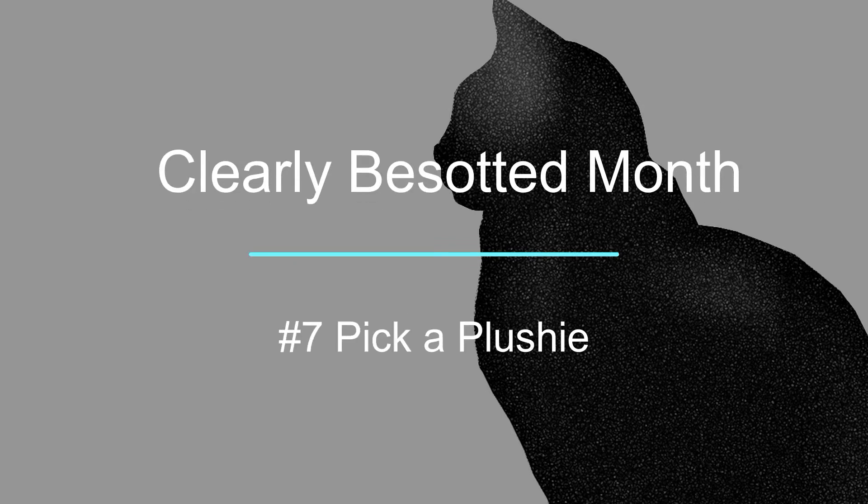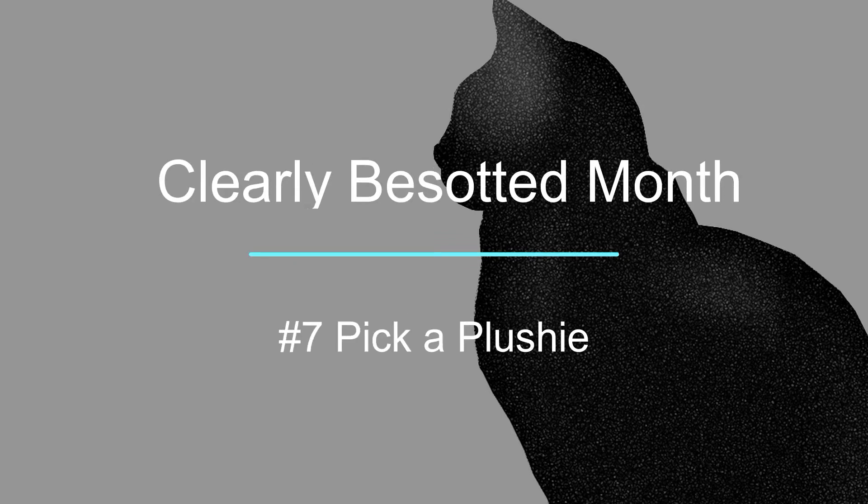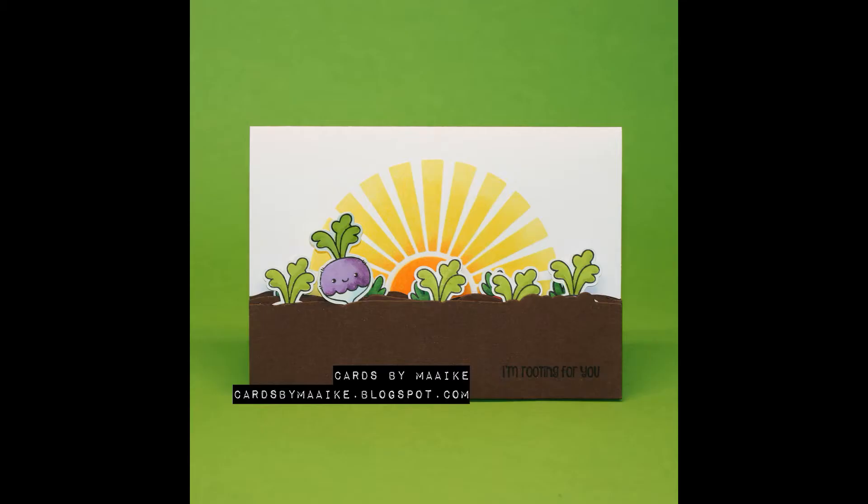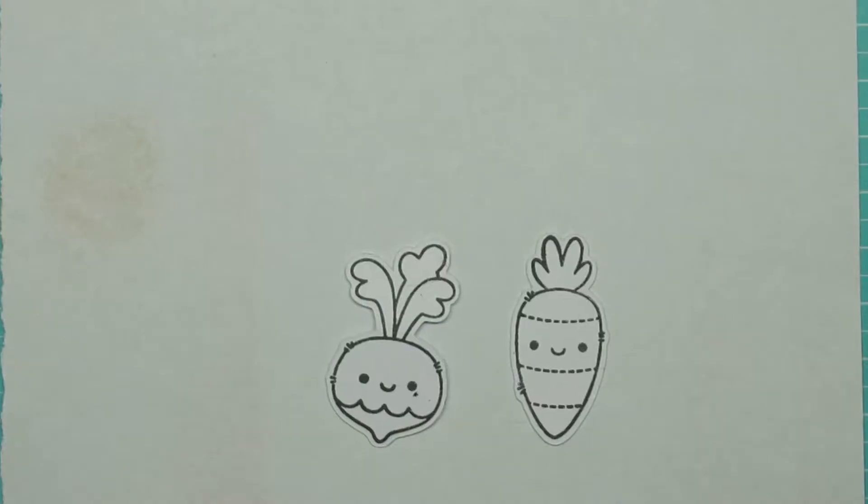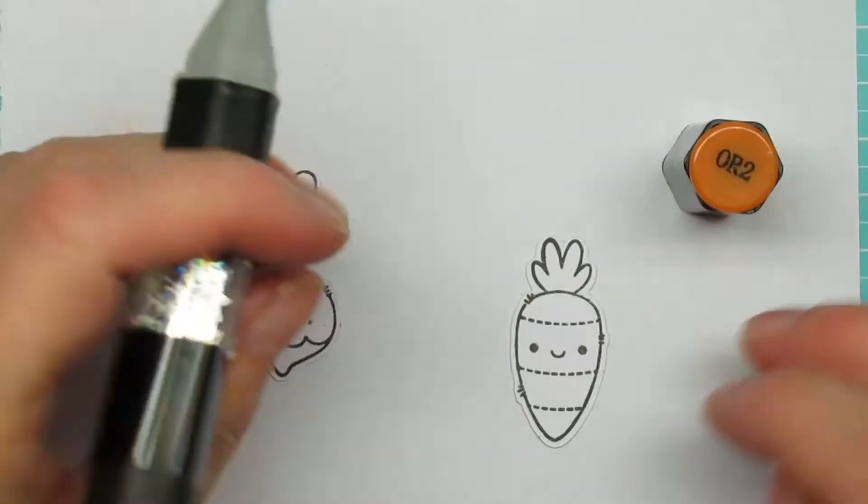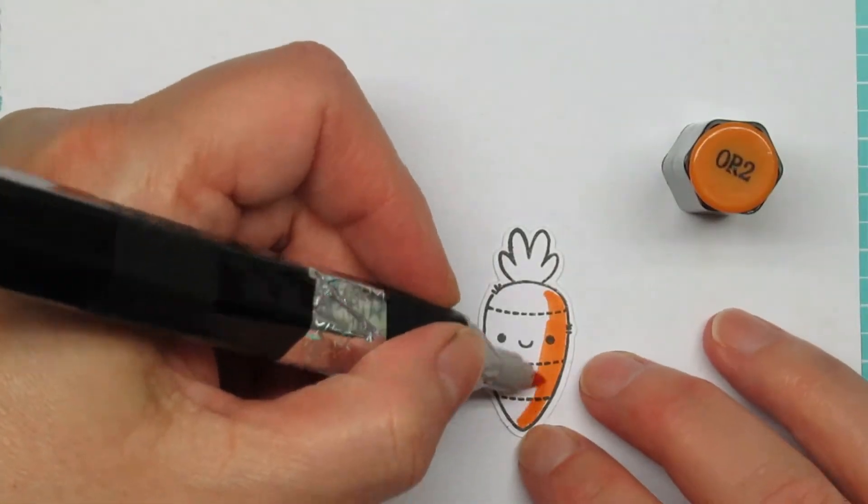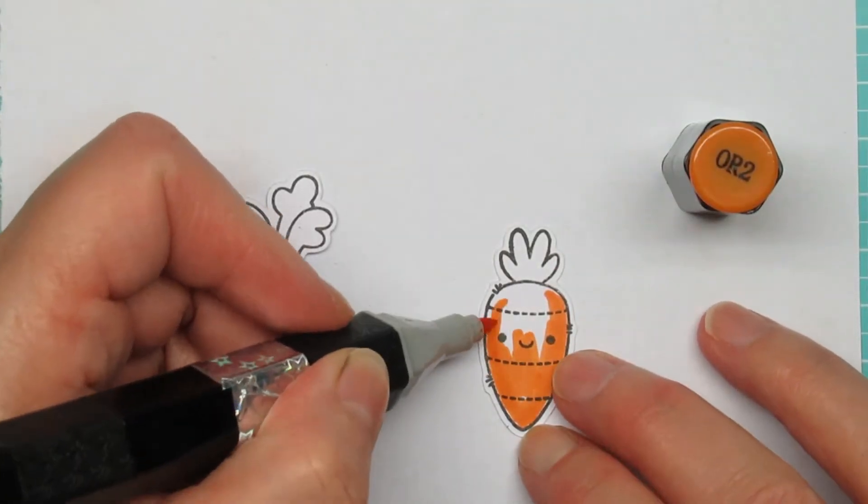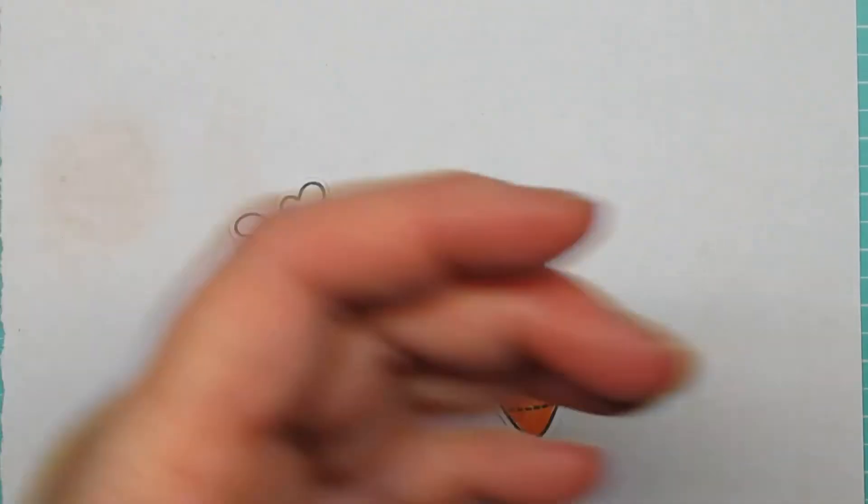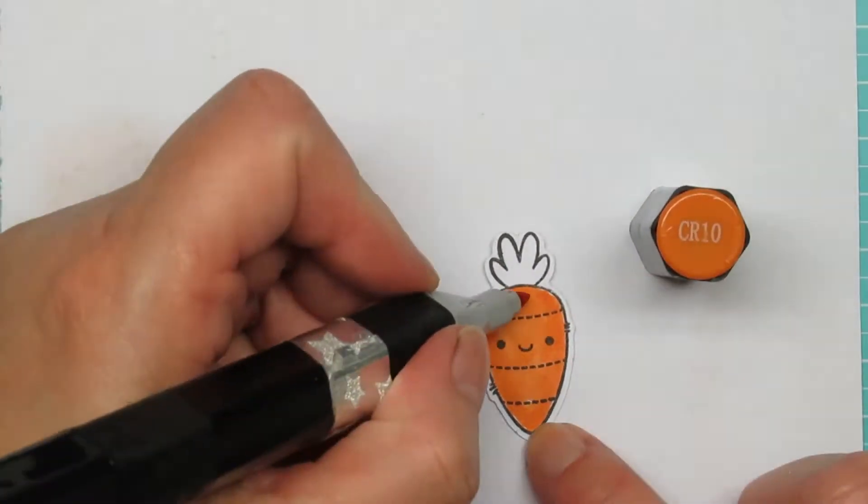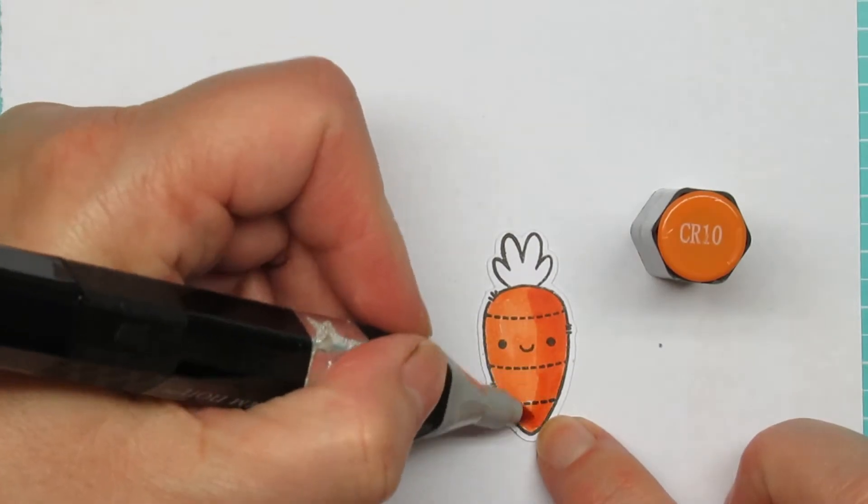Hi guys, I'm back with Clearly Besotted month number seven, Pick a Plushie, and what I did is make it interactive. I'm starting with the coloring so I can tell you a few disclaimers that you've heard before, but if you just joined us, I bought all these stamp sets myself with my own money.